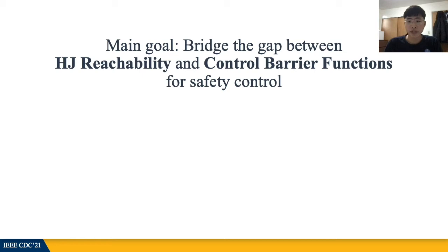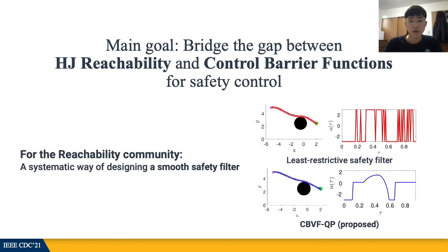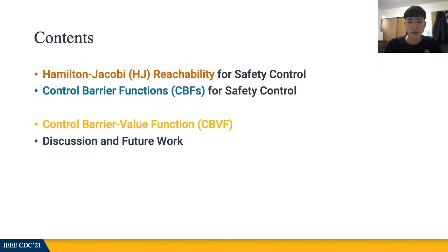The main goal of our work is to bridge the gap between these two methods. Towards this end, we propose a new notion of a value function called Robust Control Barrier Value Function, which merges the characteristics of these two methods. With the new concept of the CBVF, we provide the reachability community a new systematic way of designing a safety filter that can resolve the issue of common jerky behaviors of the conventional least-restrictive controller. For the CBF community, we believe our work can serve as a constructive method for designing valid CBFs that can recover the maximal safe region and that is also robust to bounded disturbance. In this presentation, I will quickly give an overview of the previous two methods, highlight their pros and cons, introduce the new concept of the CBVF, and end with some future work directions.